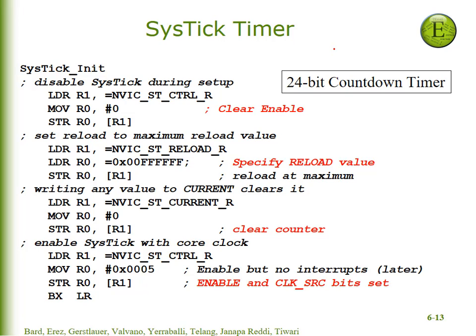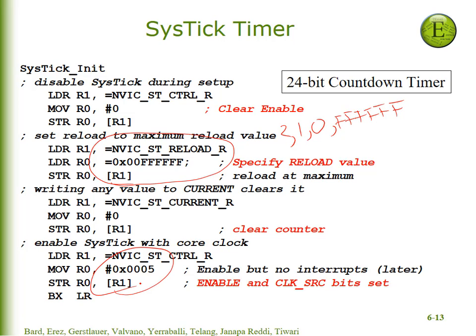Here's our initialization — you can find this in the book and you're going to copy-paste it into your lab in the appropriate spot. The reload value is going to be six F's, which specifies the value it reloads to after it counts 2, 1, 0. The second thing is we want to write a 5 into the control register, and that will enable the device and set the bus clock as the source of the counting.